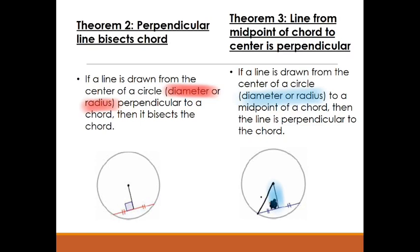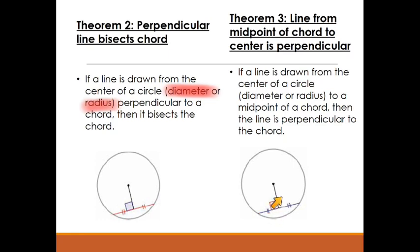Drawing two radii, we know all radii are congruent, this segment is congruent to itself, and we're given that this segment is congruent to this segment. Therefore this triangle is congruent to this triangle by side-side-side, and every part is congruent by CPCTC. Therefore this angle must be congruent to this angle, and if two congruent angles add up to 180 degrees, they must both be right angles. So if a segment from the center goes to a midpoint on a chord, it must be perpendicular — Theorems 2 and 3 are the same relationship, just converses of each other.